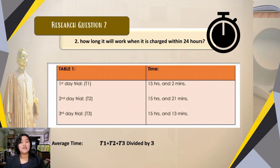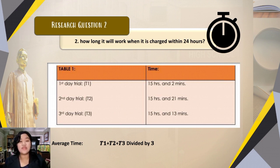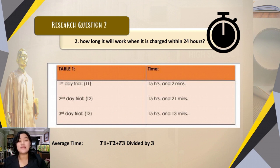For research question two, the researchers used a total average formula to calculate the average time among all trials, indicating how long the robot will work when fully charged. The robot was tested in three trials to determine how long it will operate when charged within 24 hours. The first trial lasted 15 hours and 2 minutes, the second trial took 15 hours and 21 minutes, and the third trial took 15 hours and 13 minutes.